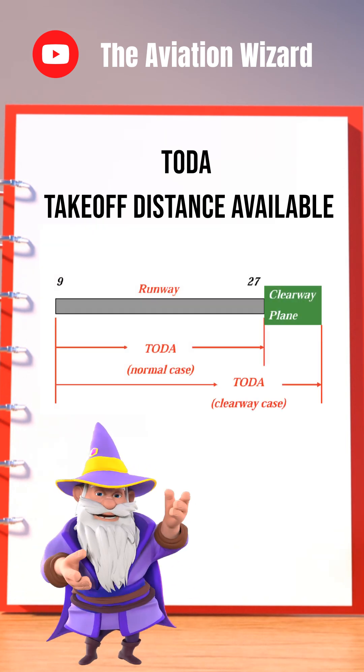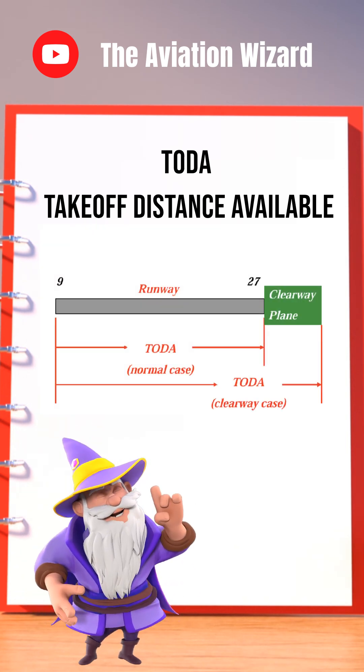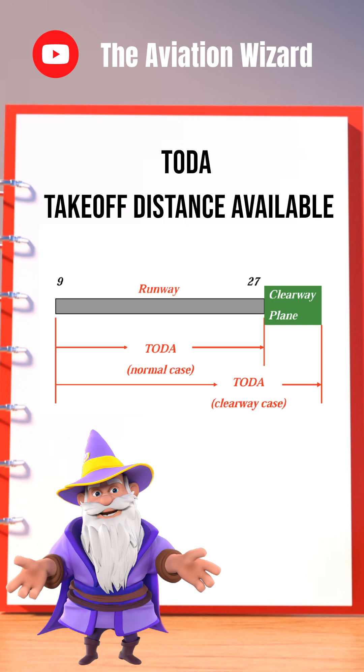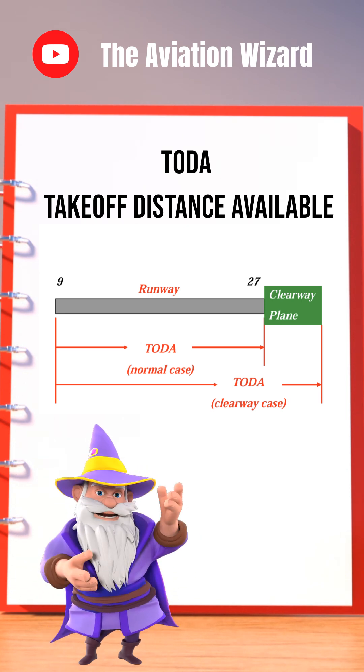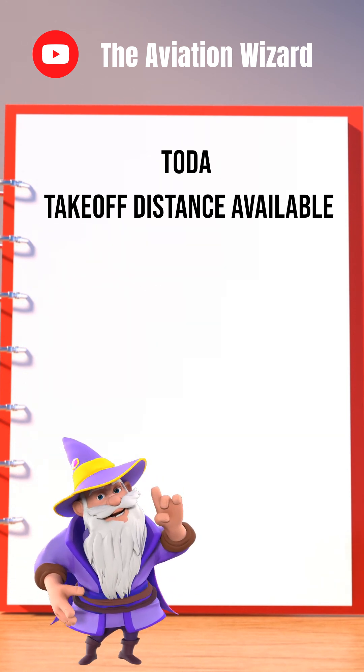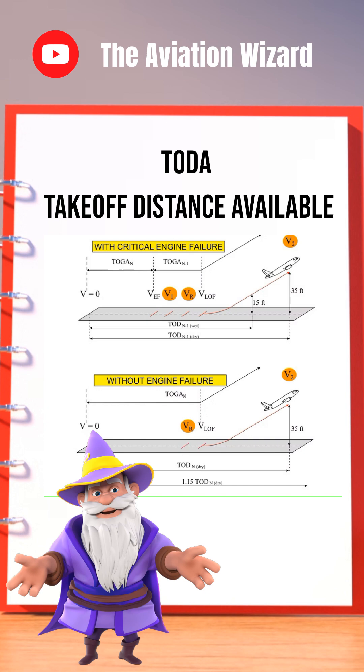The clearway helps ensure the aircraft can achieve the necessary height, especially when obstacles are in the departure path. It plays a key role in meeting screen height requirements for safe departures.